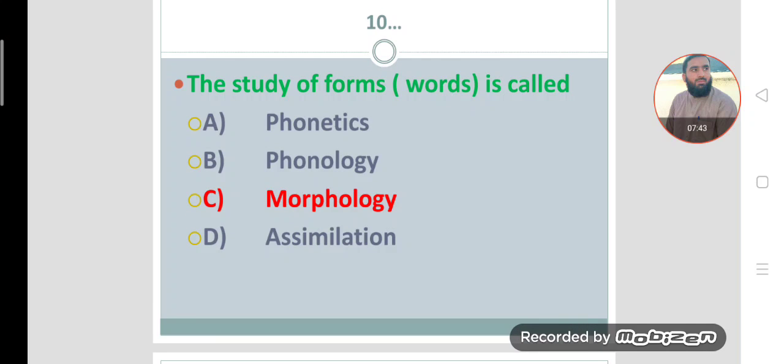The study of forms of words is called morphology. Option C is the correct option. The study of forms of words is called morphology, or we can say the study of structure of words is called morphology, or the study of word formation is called morphology.